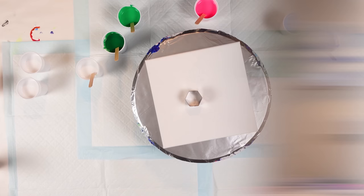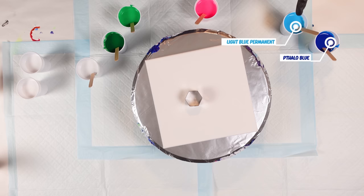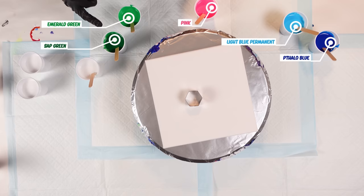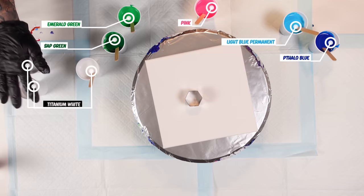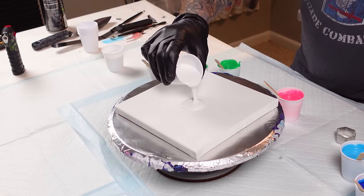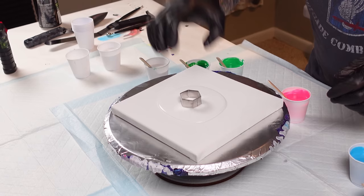The colors we're using are phthalo blue, light blue permanent, fluorescent pink, emerald green and a sap green, and titanium white. All these colors were mixed with one drop of silicone. Then I have two whites over here to function as a base coat that don't have any silicone at all. I want to stop some of those beautiful cells from rolling under. That's what the base coat is for.